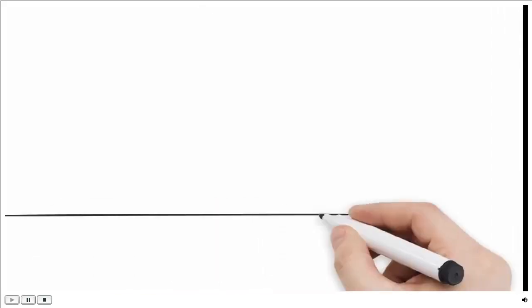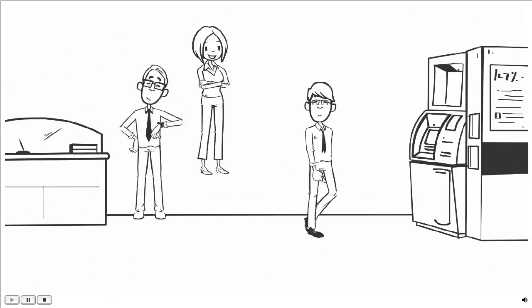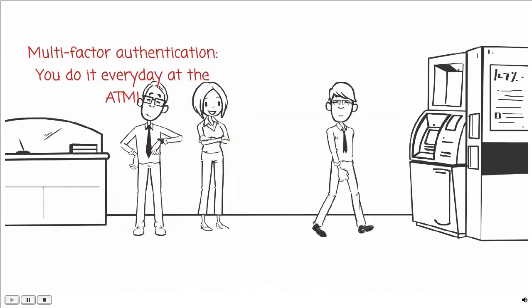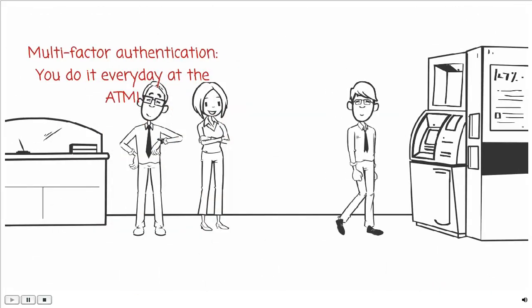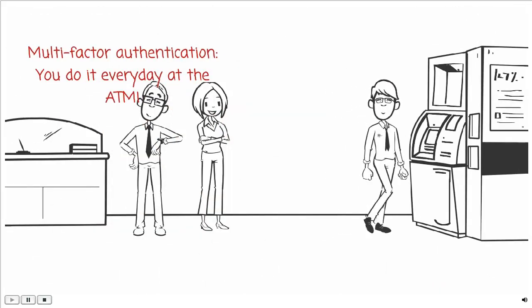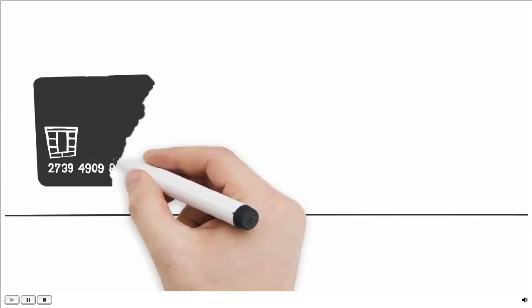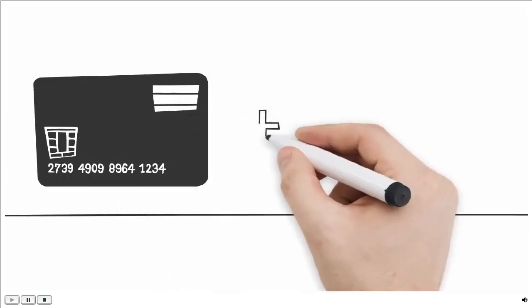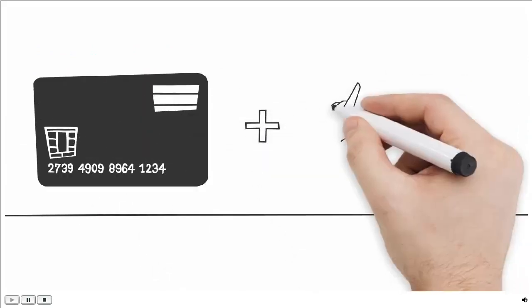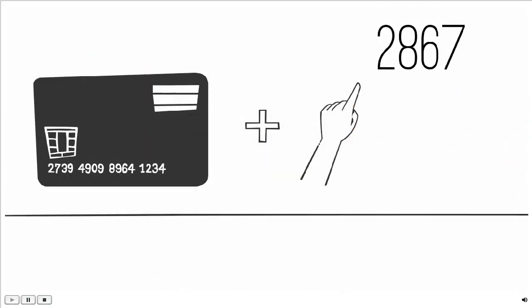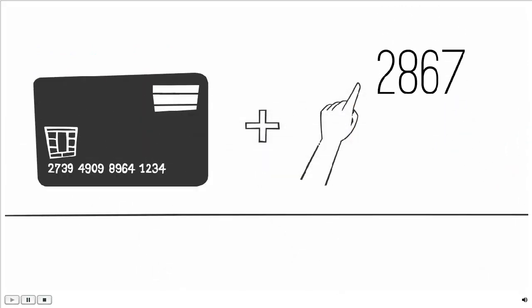A good example from everyday life is the withdrawing of money from a cash machine. Only the correct combination of a bank card — something that the user possesses — and a PIN, something that the user knows, allows the transaction to be carried out.